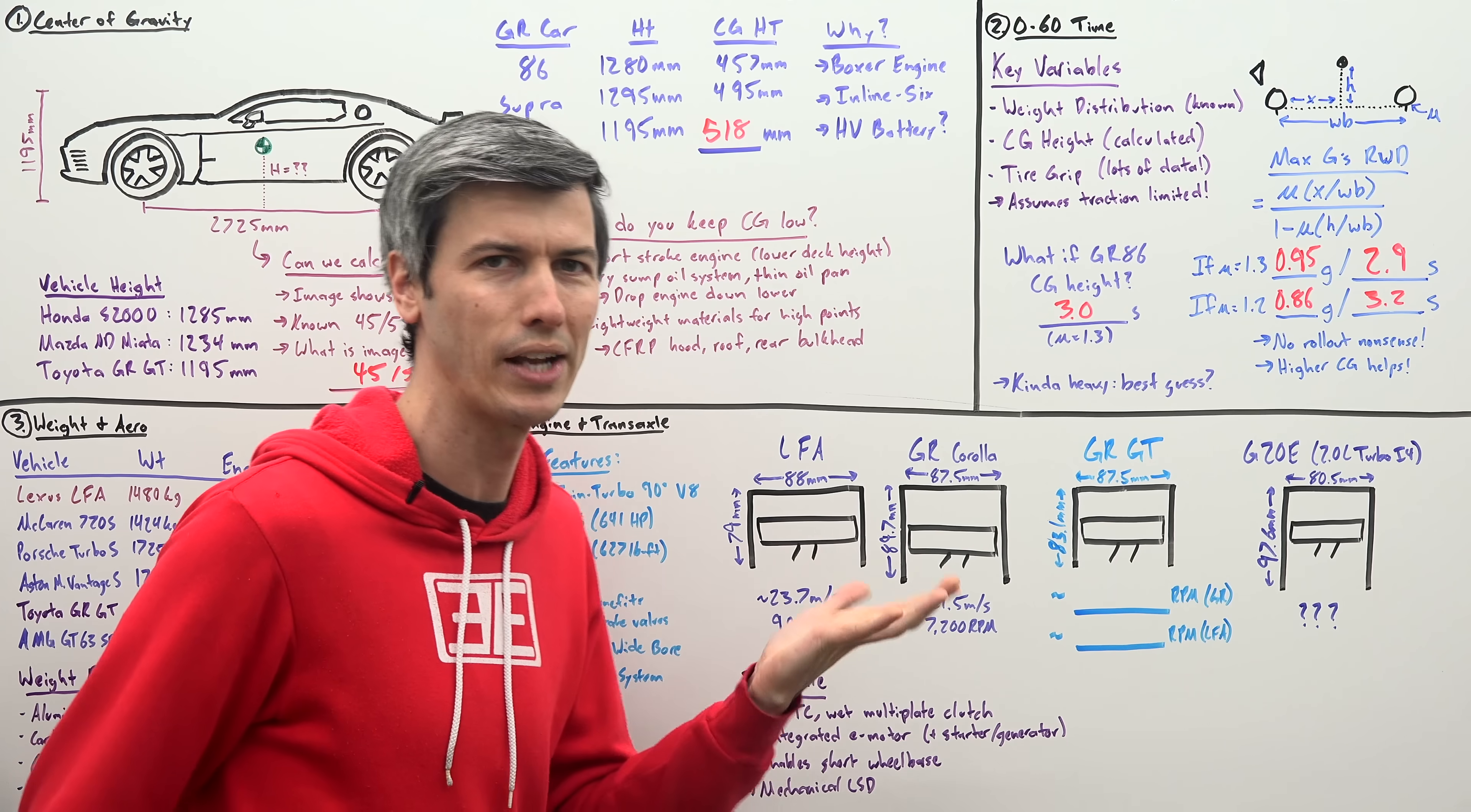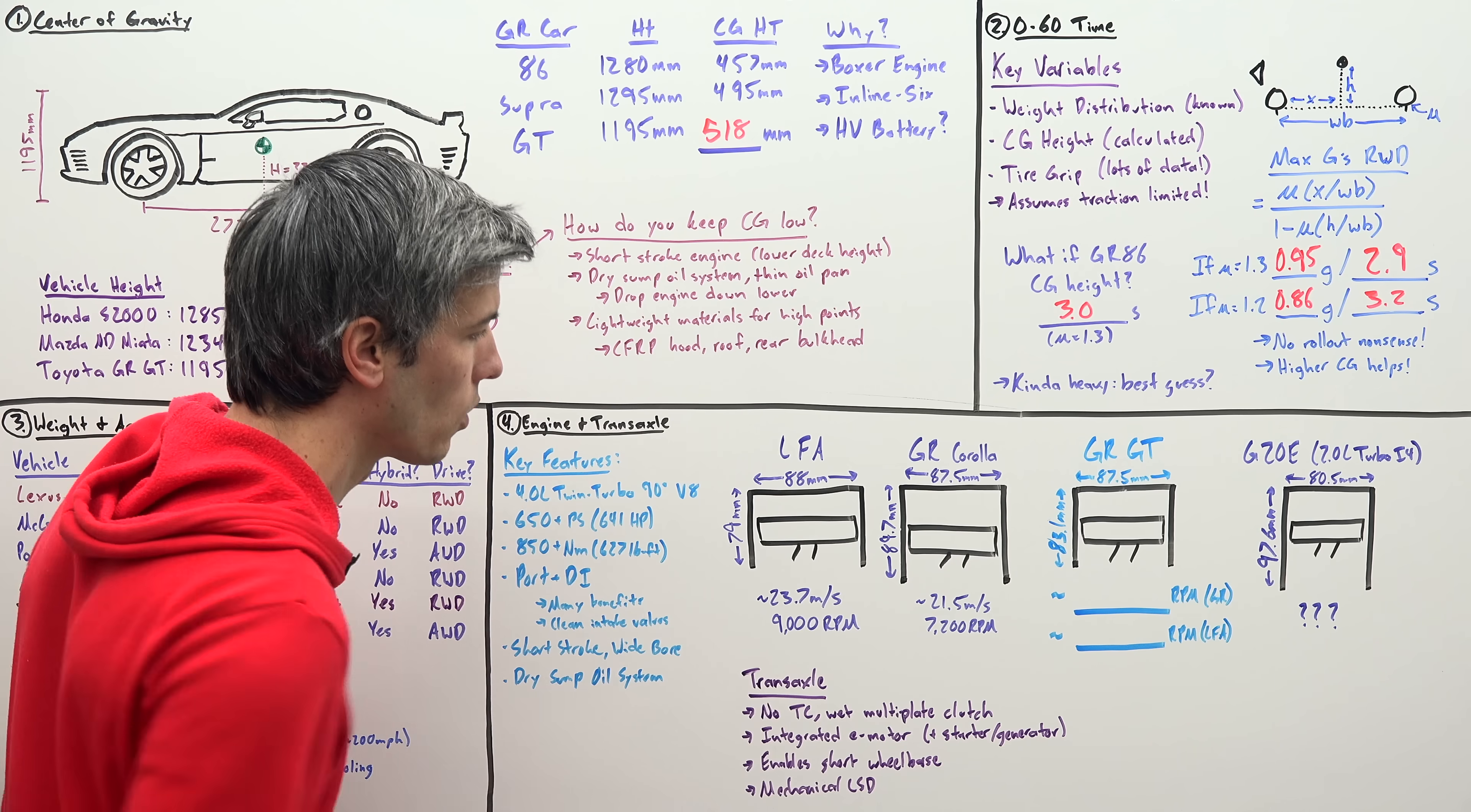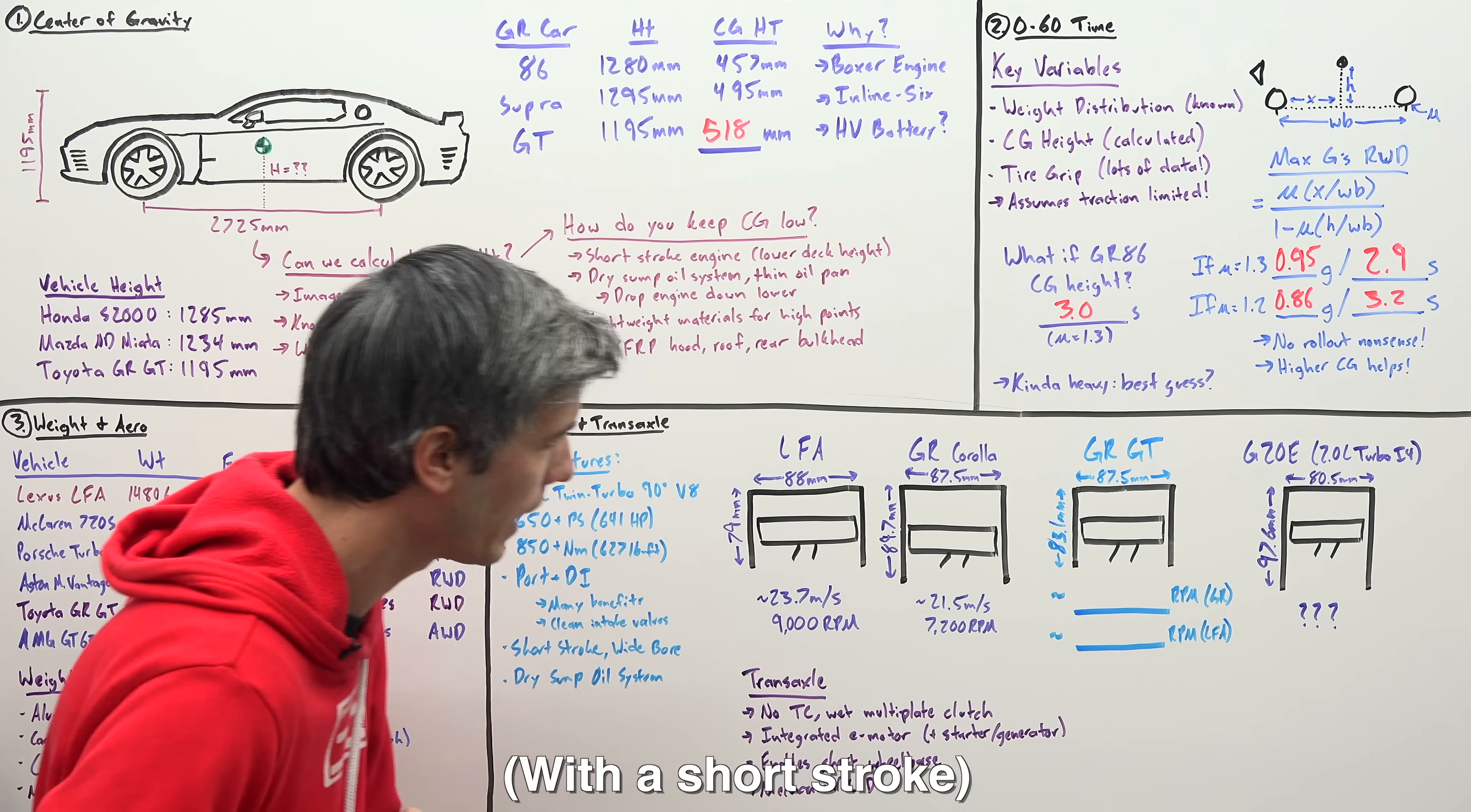This engine also has a short stroke and a wide bore. So let's kind of look through some other Toyota engines out there and compare it, starting with the Lexus LFA. 88 millimeter bore with a 79 short stroke, which allowed it to rev up to that 9000 RPM. Now looking at the GR Corolla, very similar in bore, but a longer stroke. Significantly longer stroke here. Doesn't rev quite as high, 7200 RPM. The GR GT matches the bore of the GR Corolla, but uses a significantly shorter stroke. So looking at that, you could kind of say, hey, look, it looks a little bit like it's a bit of an eight cylinder GR Corolla engine.